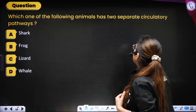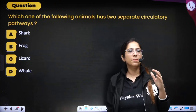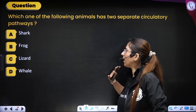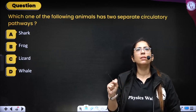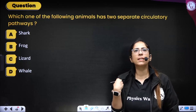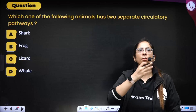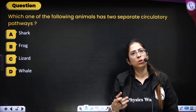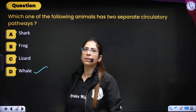Next question: which animals show two separate circulatory pathways? Options: shark, frog, lizard, or whale. In mammals, complete separation of circulation is seen — pulmonary circulation and systemic circulation — both separate. This is seen in whales. Correct option is whale.